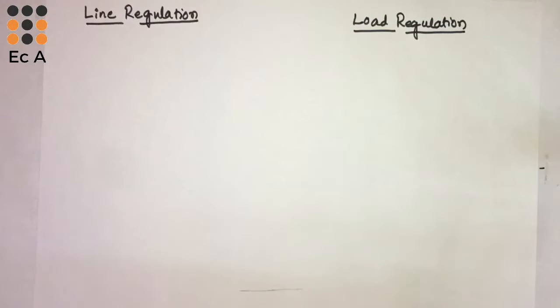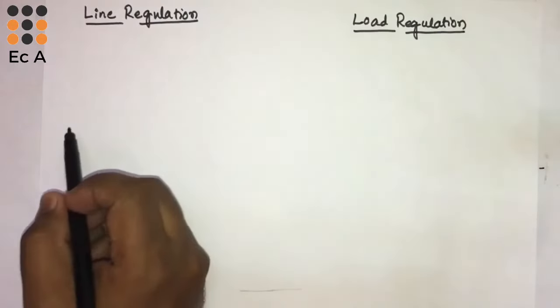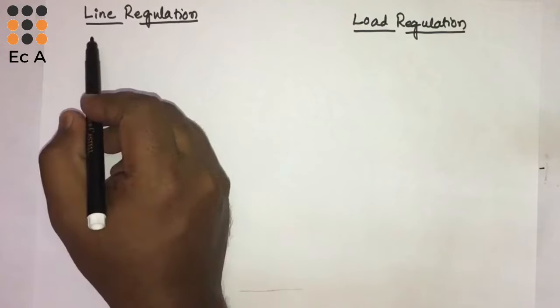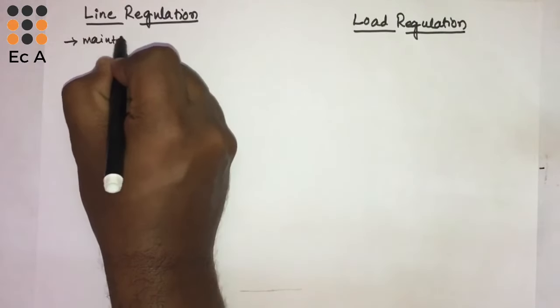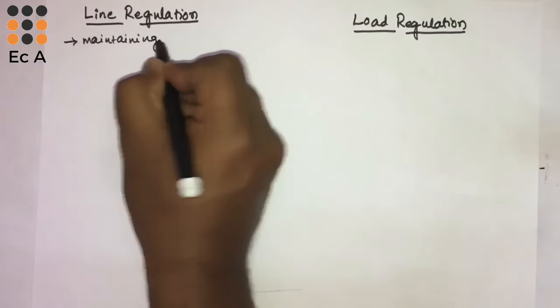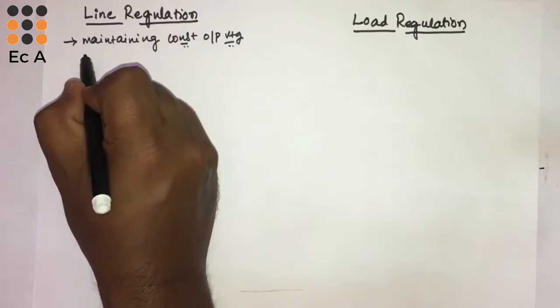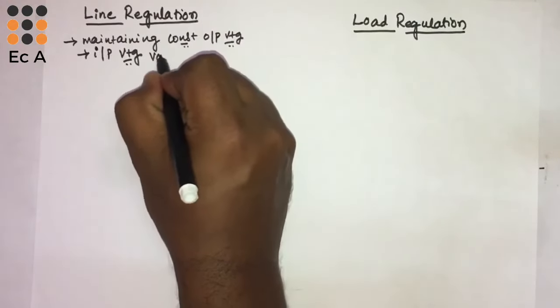Hello friends, welcome to EC Academy. In this lecture we will understand what is line regulation and load regulation. Regulation is a process of maintaining constant output voltage even though the input voltage is varying. Maintaining a constant output voltage even though the input voltage is varying is known as line regulation.